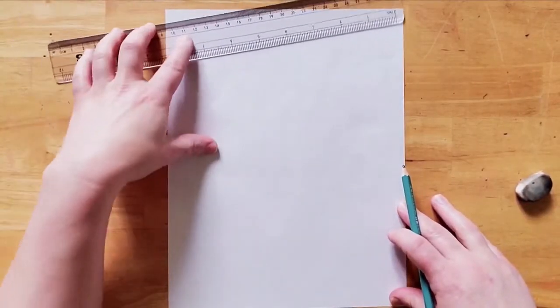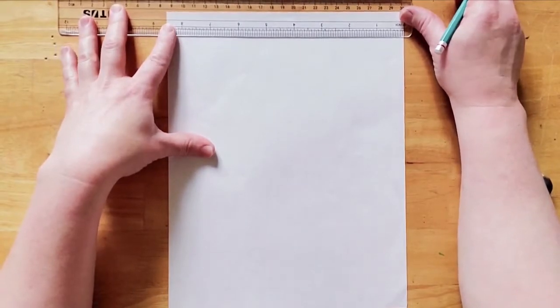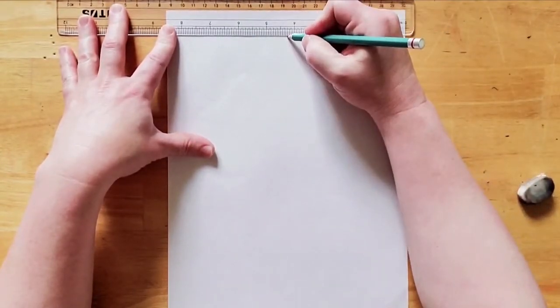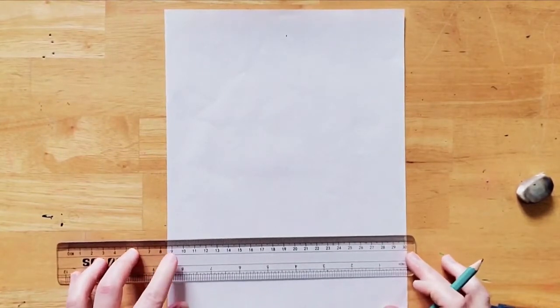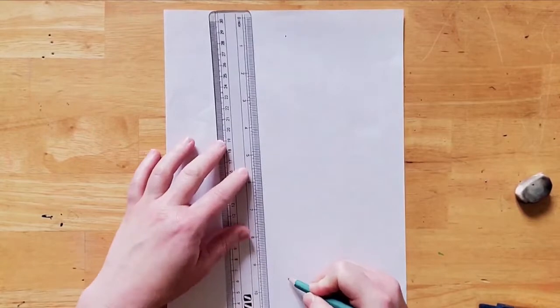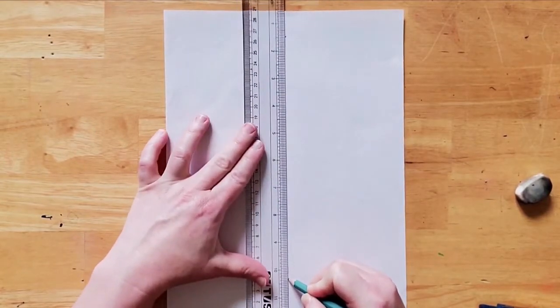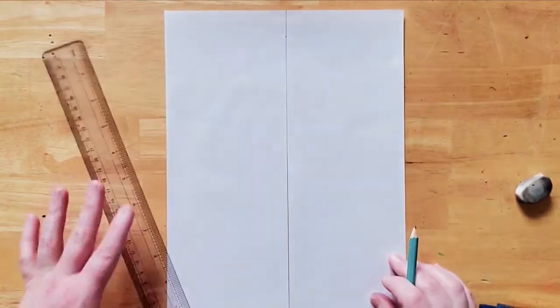Let's start by drawing a center line. Palladio calls this a catheto, or the plum line. If you're using a regular sheet of paper, you can measure four and a quarter inches on each end and find the middle of your paper. Make sure the ruler touches both points so that it's perfectly straight.